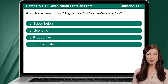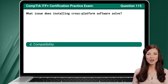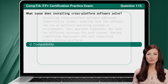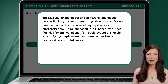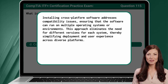Question 115. What issue does installing cross-platform software solve? The answer is D: Compatibility. Installing cross-platform software addresses compatibility issues, ensuring that the software can run on multiple operating systems or environments. This approach eliminates the need for different versions for each system, thereby simplifying deployment and user experience across diverse platforms.